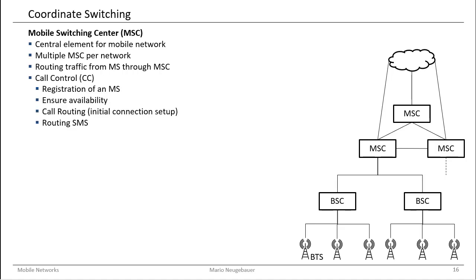One important task for the mobile switching center is to do the call control. For call control, you need the registration of a mobile station. The mobile switching center needs to know which mobile stations are in its area, managed through its base station controllers and base transceiver stations. It also has to take care of availability — knowing when a mobile station is available or not available in the network.